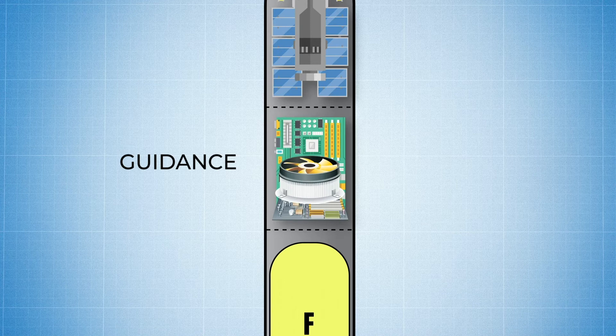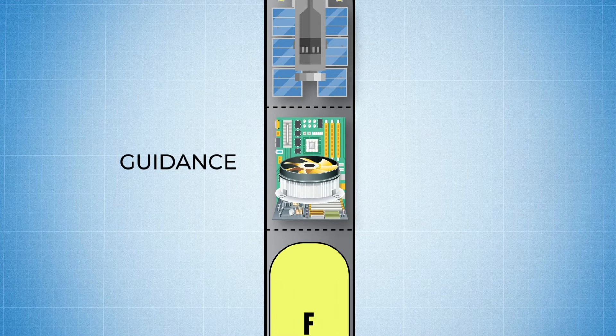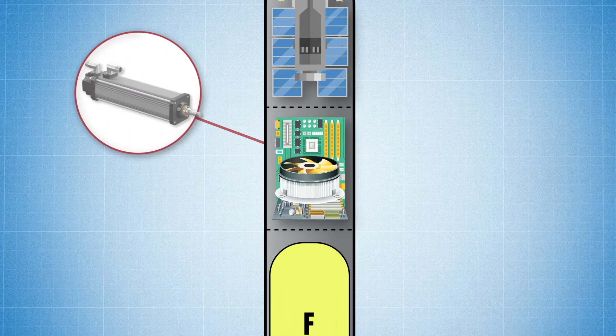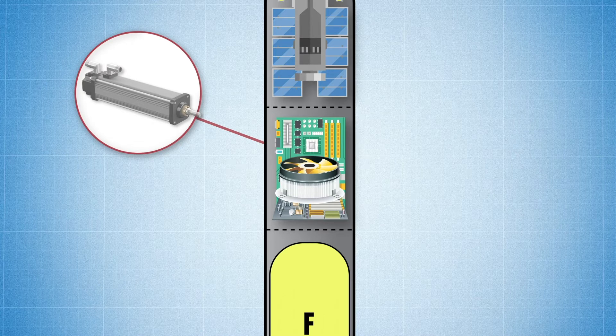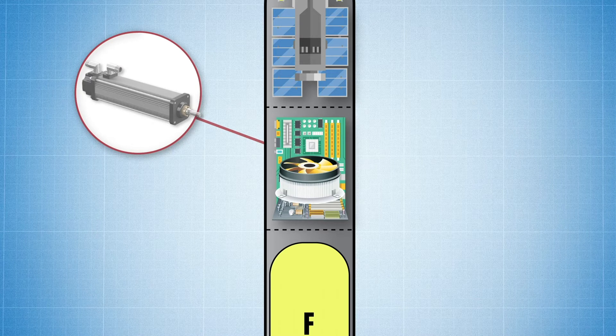Next up is the guidance system. The guidance system helps keep our rocket on target. Linear actuators are used to control the rocket's direction by gimbling the engines, helping to guide the rocket on its intended course.